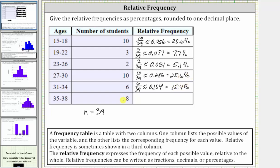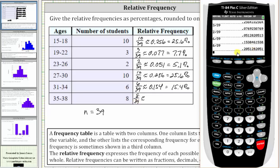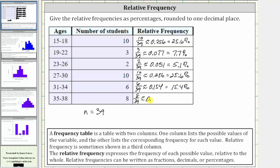And for the last example, there are eight students with ages 35 through 38. The relative frequency is 8/39, which is approximately 0.205, which is 20.5%. I hope you found this helpful.